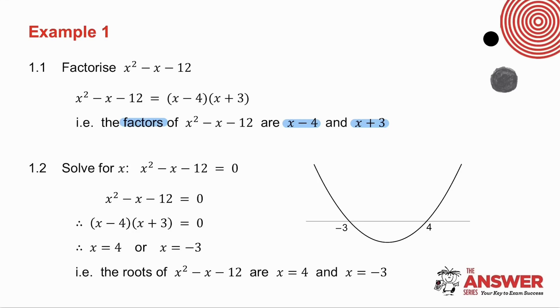In 1.2, I ask you to solve for x in the equation. We factorize and we get our two values of x. So that means the roots of x squared minus x minus 12 are x equals 4 and x equals minus 3.